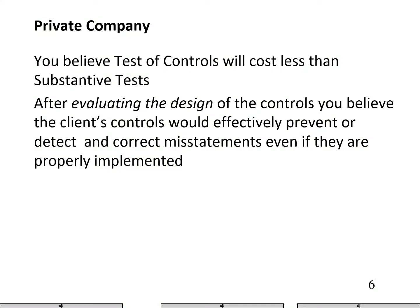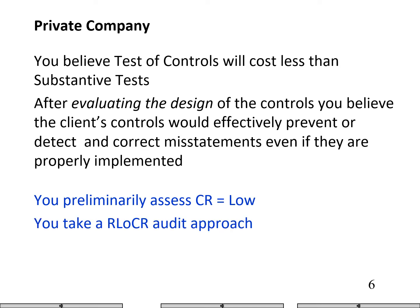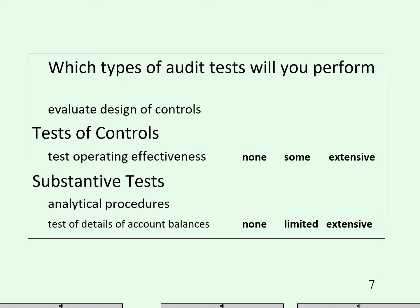Next scenario: you believe the tested controls will cost less. However, in this case, you believe the client's controls will be effective. So this is what we're hoping for. We preliminarily assess control risk is low. We're going to take a reduced level control risk approach — always extensive tested controls, some analytical procedures. And we can limit the extent of our substantive testing because the controls are effective.